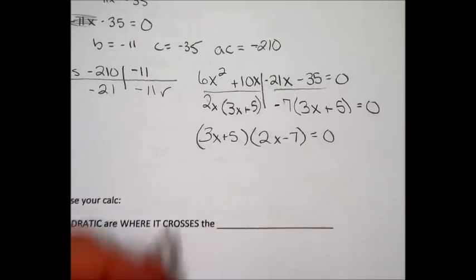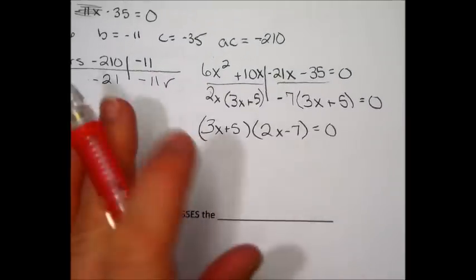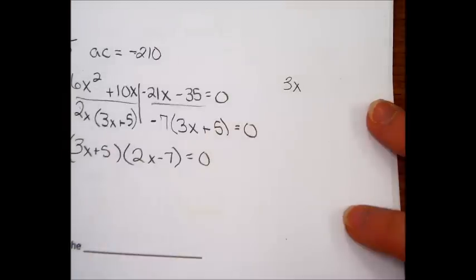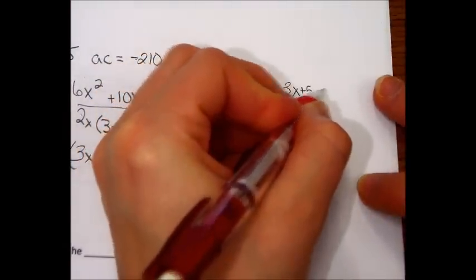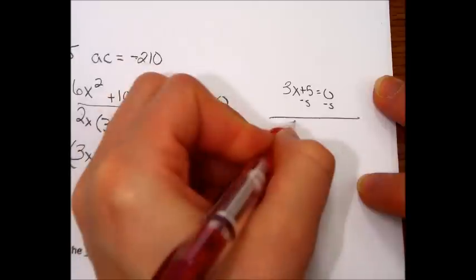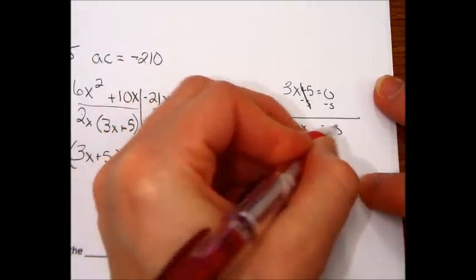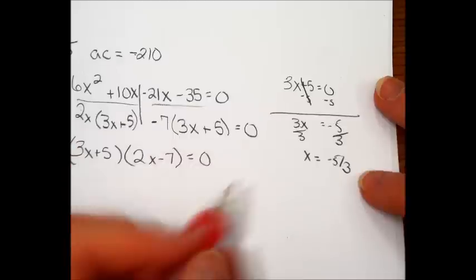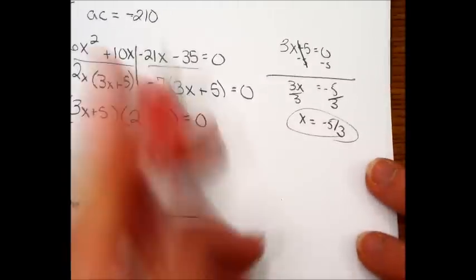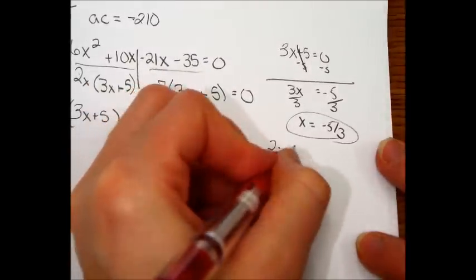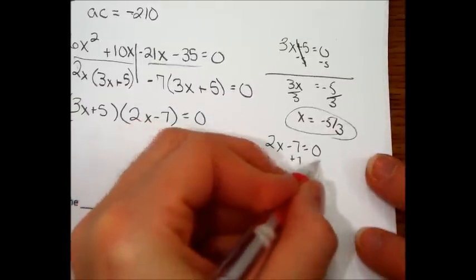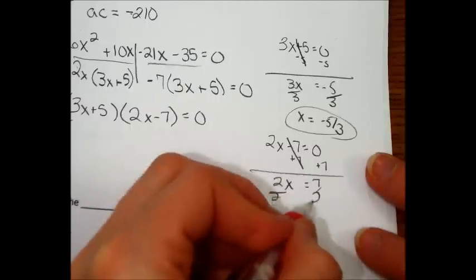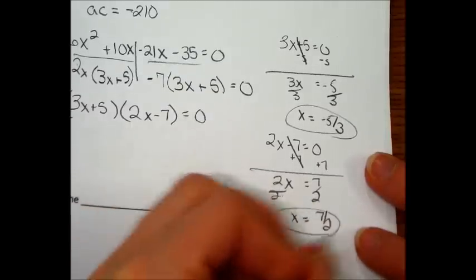Here's the equal 0, and then the last step is to solve each one. I'm going to move right over here now. So I had 3x plus 5 equals 0. Minus 5, minus 5. 3x equals negative 5. Divide by 3, divide by 3. x equals negative 5 over 3. Second one: 2x minus 7 equals 0. Add 7, add 7. 2x equals 7. Divide by 2, divide by 2. x equals 7 over 2. Take care.